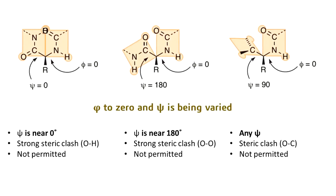Now, let us see more complicated cases. We set one angle to 0 degrees and vary the other. Let us first set phi to 0 and vary psi. Observe that when psi is near 0, there are very serious steric clashes between the amino group hydrogen and the carboxyl group oxygen. This means when phi is near 0, psi values near 0 are not permitted.